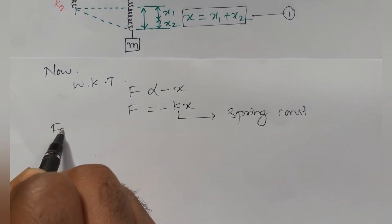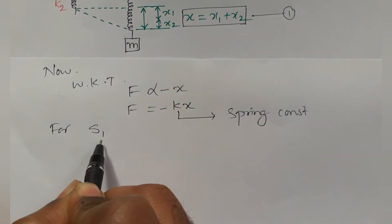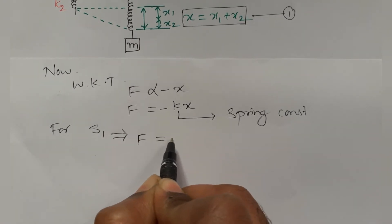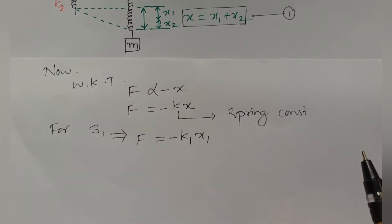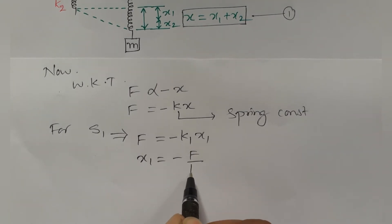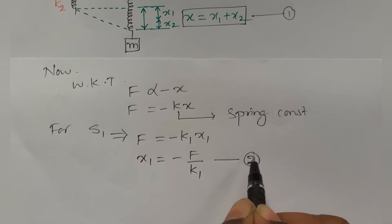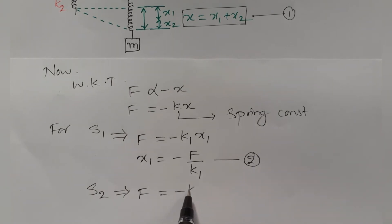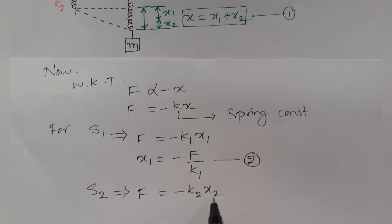For spring S1, this equation can be written as F = −K1·X1, and we can write X1 = −F / K1. Let us call this equation number 2. Similarly, for S2 we write F = −K2·X2, where K2 is the spring constant of the second spring and X2 is the elongation in spring S2. Let us call this equation number 3.